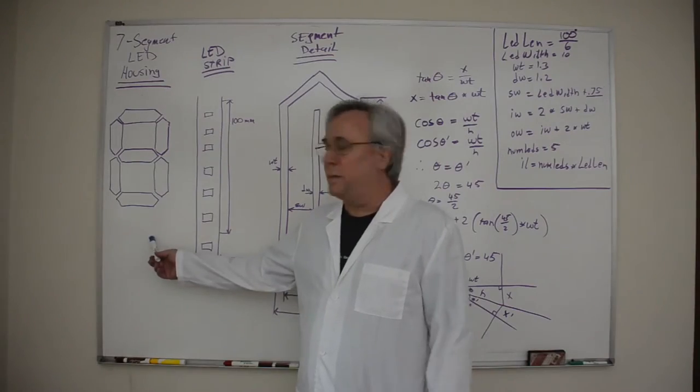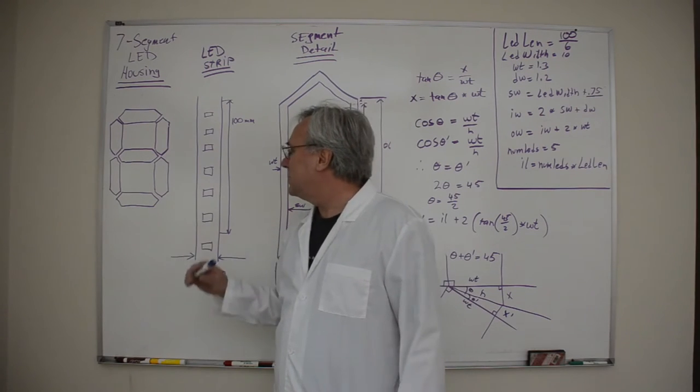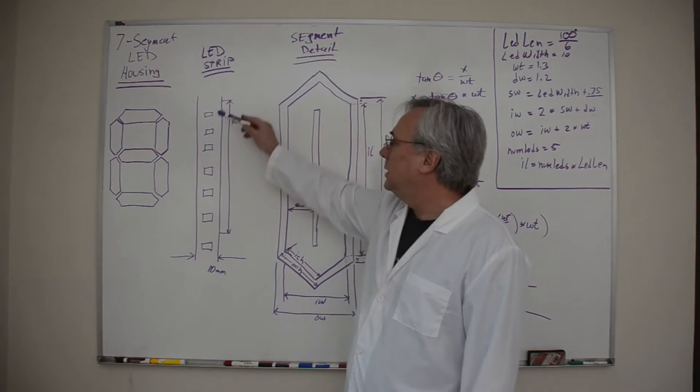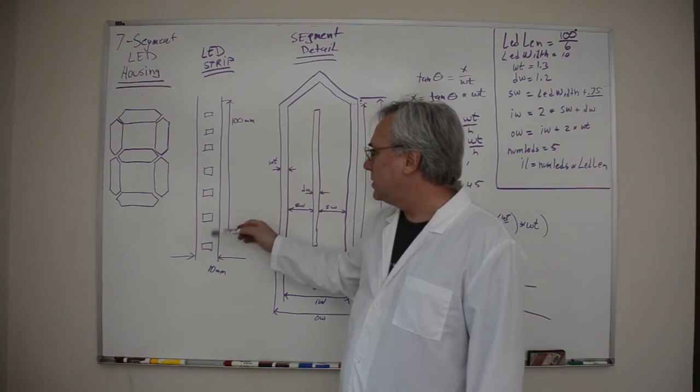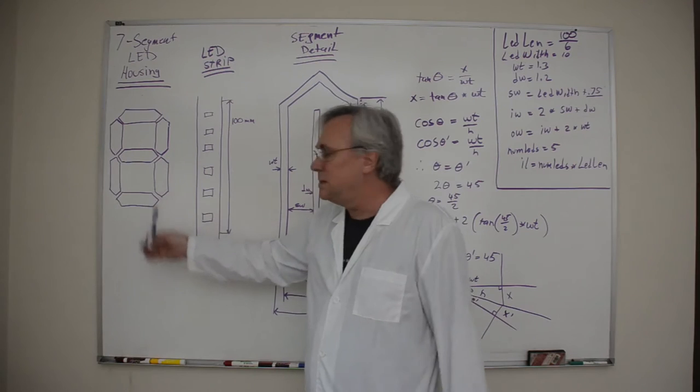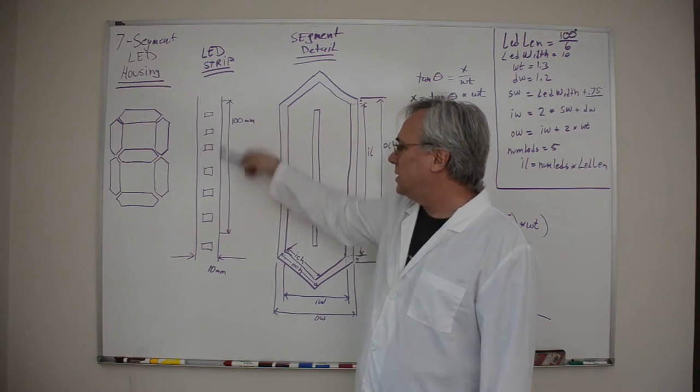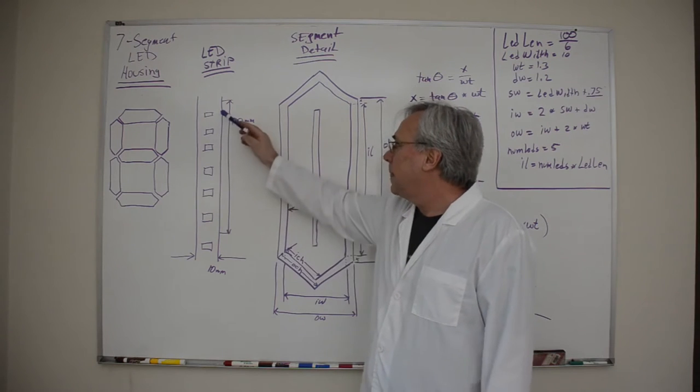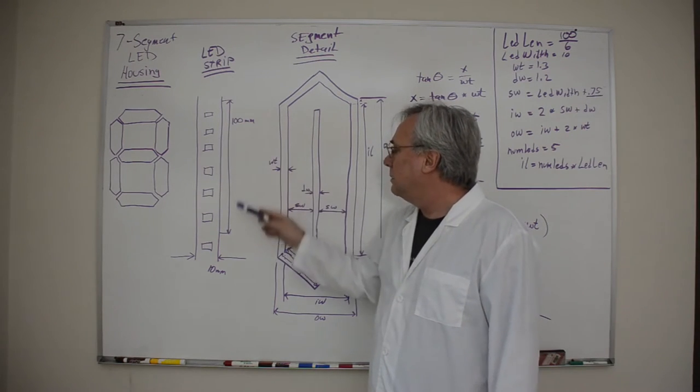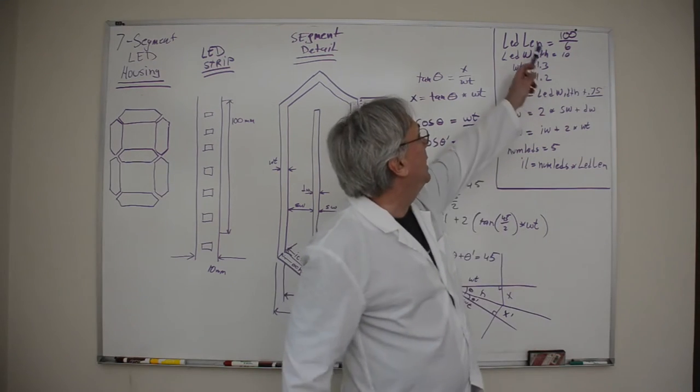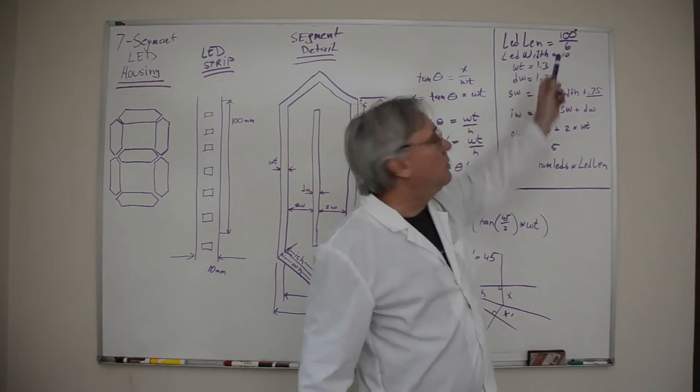To print a seven segment LED housing that's shaped like this with strips like this we need to know the dimensions of the strips and how many pieces of strips are going to go in each one of these segments. Measuring the strips that I have I noted that six of the LEDs provide a length of a hundred millimeters. The width of the strip is 10 millimeters. I record that as LED length and LED width.